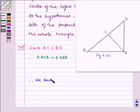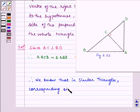Therefore, we know that in similar triangles, corresponding sides are proportional.